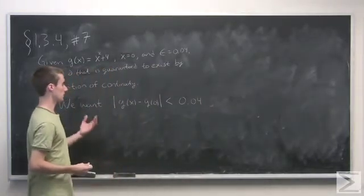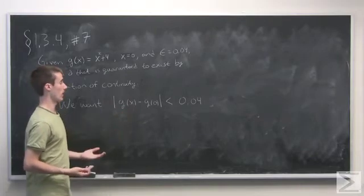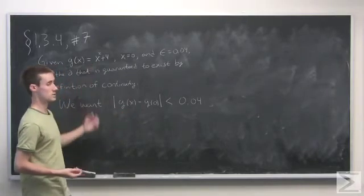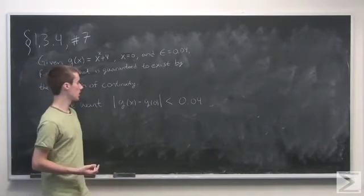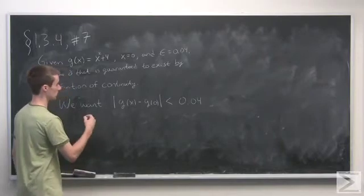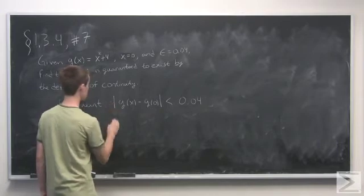So now we want to ask the question: if I pick x close enough to 0, will that happen? Well, the answer is yes because the function x squared plus 4 is continuous, but we want to know how close do we have to go to it? Do we have to go to 0 for that? So let's just play around with this.